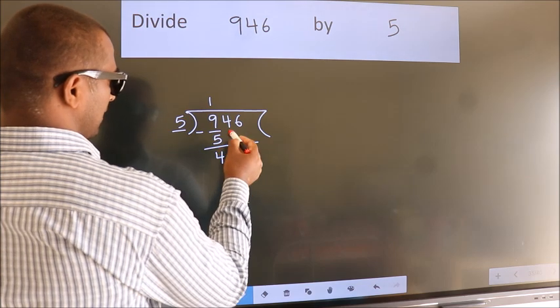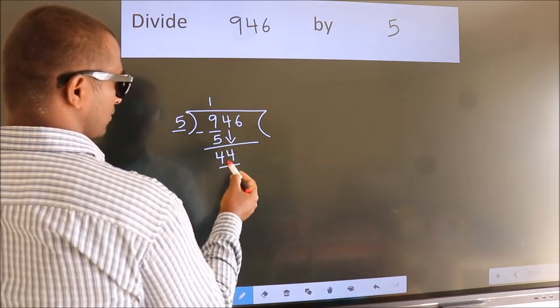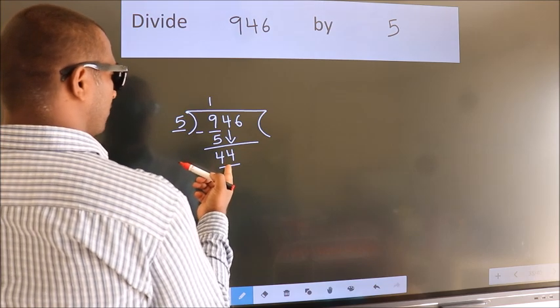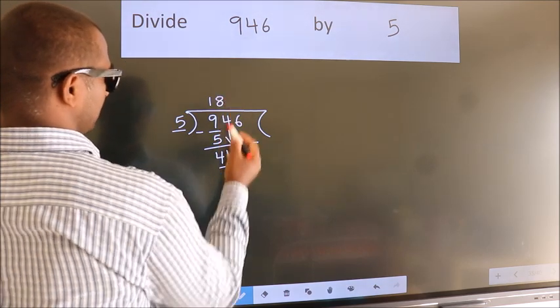After this, bring down the beside number. So 4 down. So 44. A number close to 44 in 5 table is 5 8s 40.